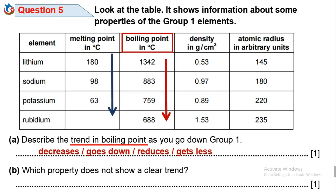We've done boiling point. Next, density increased from 0.53 to 0.97, then decreased to 0.89, then increased again to 1.53 — so density does not show a clear trend. Finally, atomic radius increases from 145 to 180 to 220 to 235, exhibiting an increasing trend. Therefore, the only property with no clear trend is density.